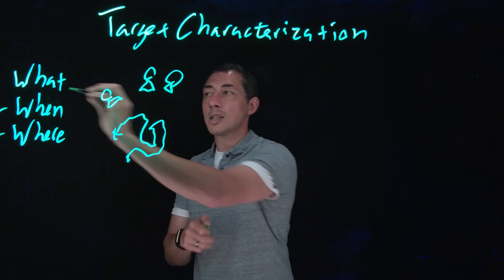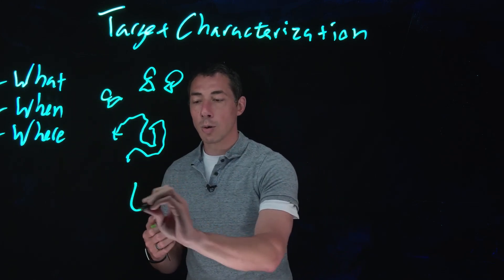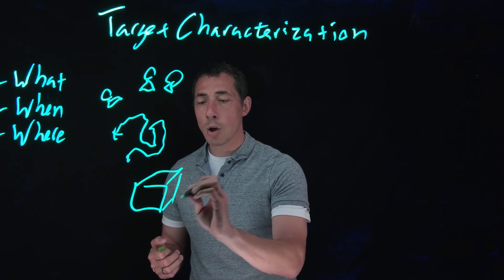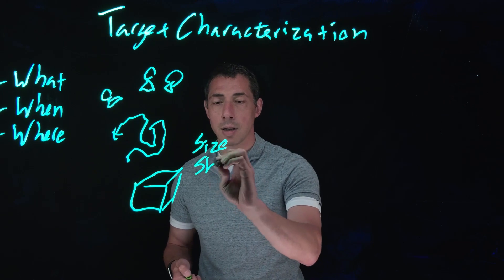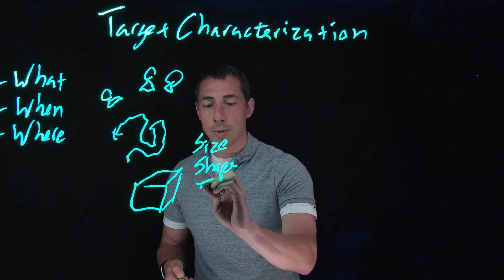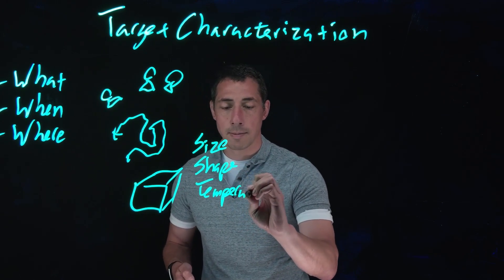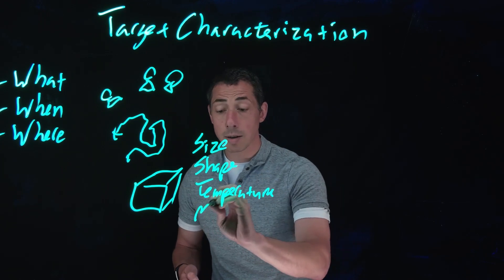But when I'm thinking about imaging systems, that's what did it look like. So for this target of interest, what did it look like. And those are the radiometric properties. So those include things like size, shape, temperature, and the material that it's made out of.